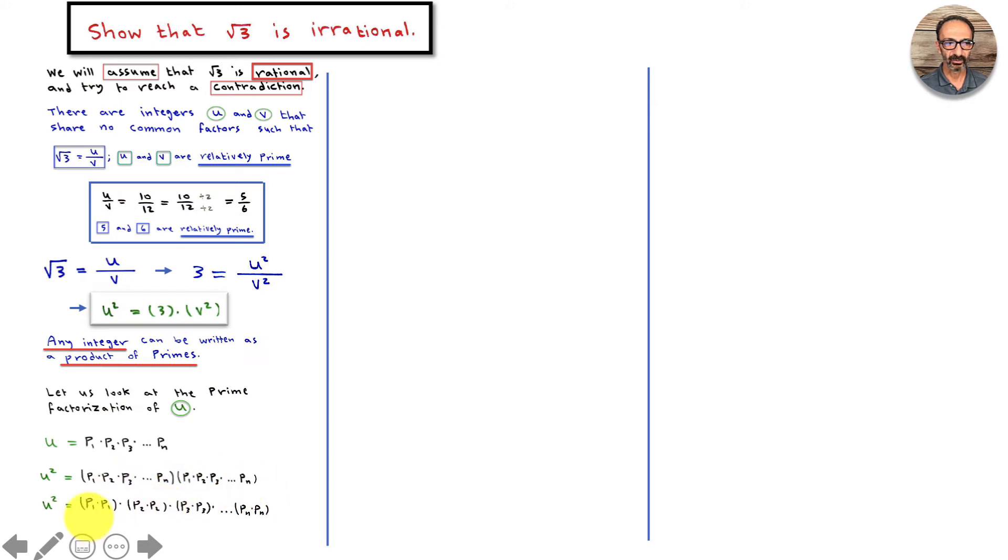Rearranging, we will have p1 times p1, p2 times p2, p3 times p3, all the way to pn times pn, and they're all multiplied together. Now we'll go back to this: u squared equals 3 times v squared.